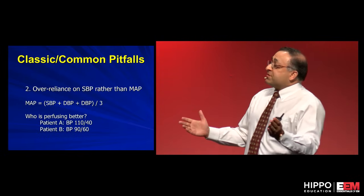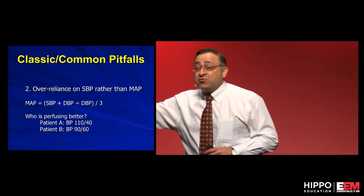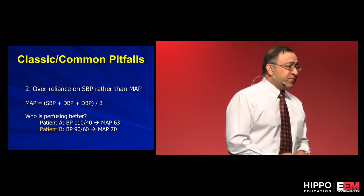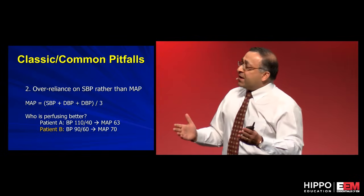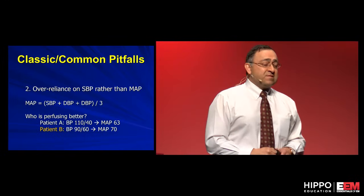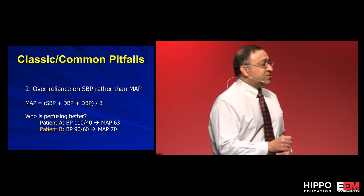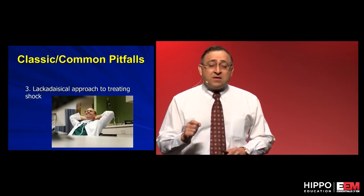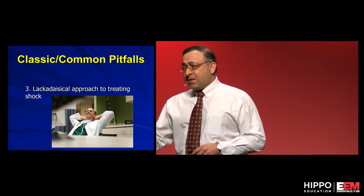Take a look at this example — who's got better perfusion? Most people glance and say it's the person with the higher systolic. Wrong. The patient with the higher diastolic has better perfusion when you run out the numbers. We don't pay enough attention to diastolic blood pressure, and that's why MAP is more important than systolic. I'd be content if we just talked about MAPs or even just diastolic blood pressure.